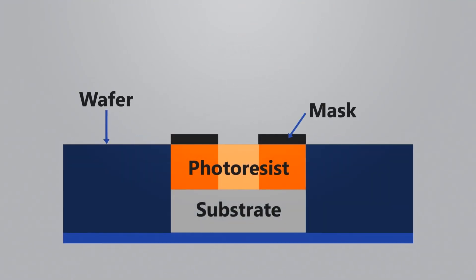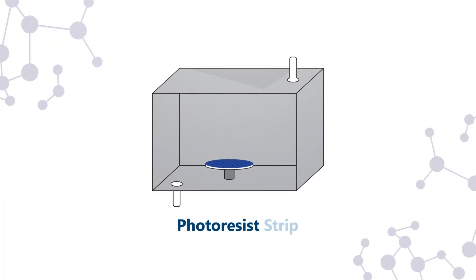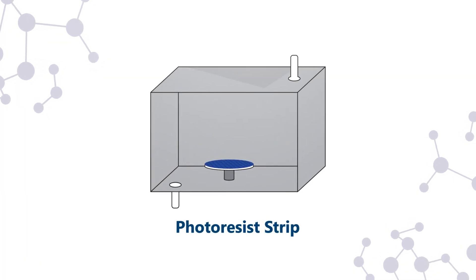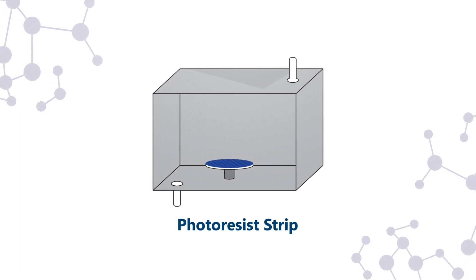In the Photo Resist Strip process, removal of unwanted layers from the wafer surface is needed prior to continuing the sequential integration processes.